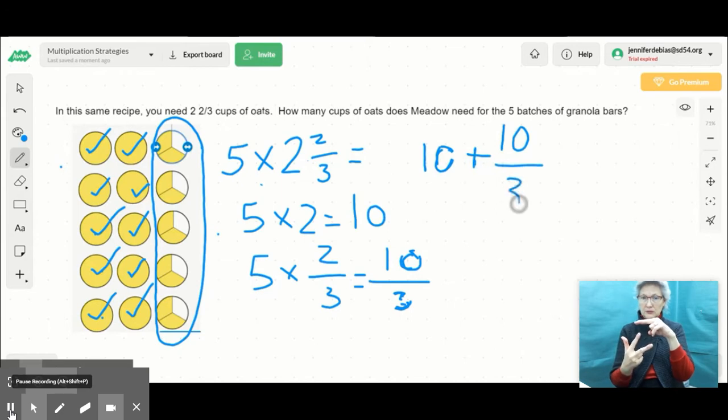But that doesn't really make sense, right? I'm not making sense of the problem. Somebody said, how many cups of oats do we need to make this recipe? And I said 10 plus 10/3. That would be very confusing. So I'm going to take these numbers, a whole number and our fraction greater than 1, and then combine them and rename them as a mixed number, one single mixed number. So what is 10/3 as a mixed number?